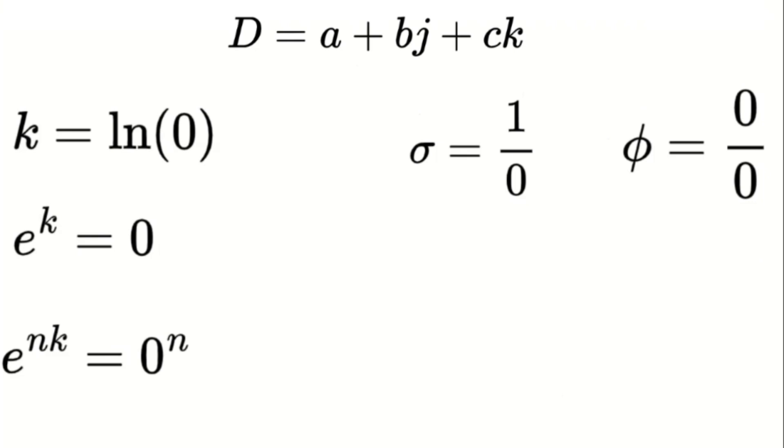So now we have three distinct components in our number system. The familiar real number system, represented by a. The virtual number system, represented by b times j. And now the singularity system, represented by c times k. By introducing k and defining singularities as fundamental units, we can now treat them as an integral part of a consistent number system, rather than as mathematical roadblocks or errors to be avoided.